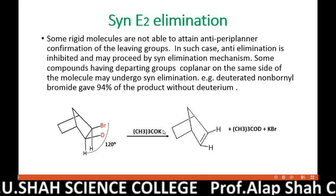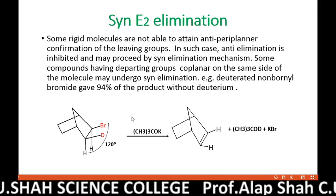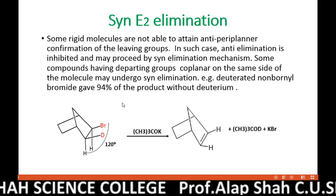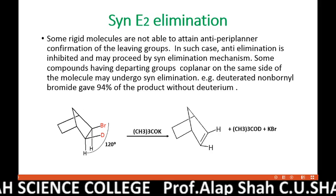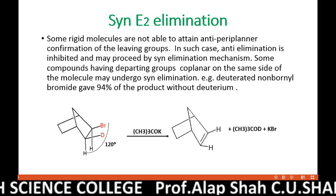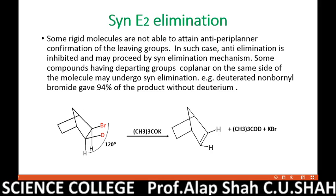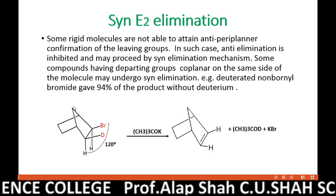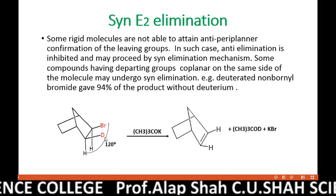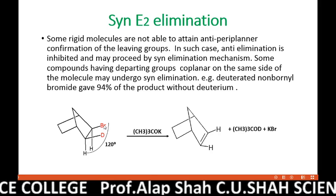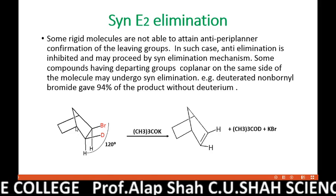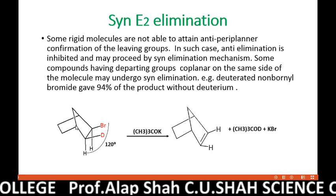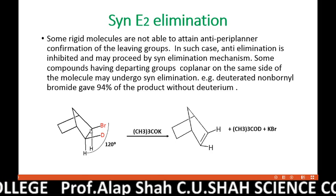In syn elimination, the leaving group and its beta hydrogen are eliminated from the same side of a plane. The example here is a deuterated norbornyl bromide — deuterium is present. This is a rigid compound because it is a bicyclic system.